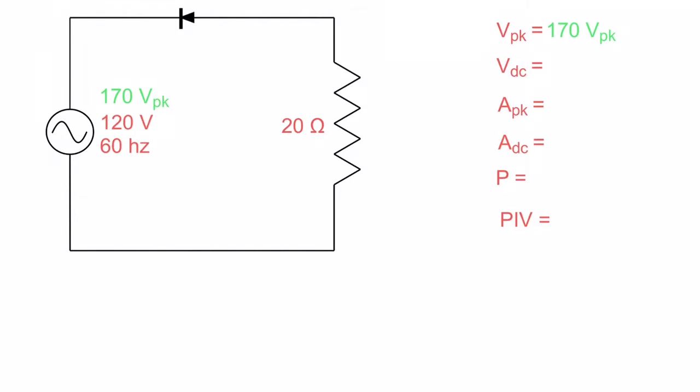Now what our next step is, is to figure out what our DC voltage is going to be. Now when we learned about AC generation, we learned that DC voltage was going to be your peak times 0.637. However, we only have half of a cycle. We only have one hump, nothing, one hump, nothing, one hump, nothing. So instead of having an average of 0.637, we're going to cut that in half, and we're going to have it as an average of 0.318.